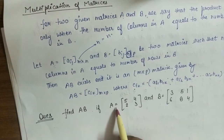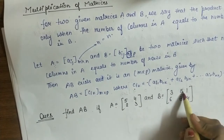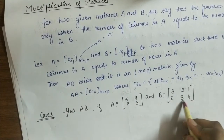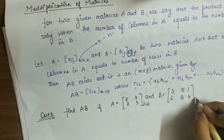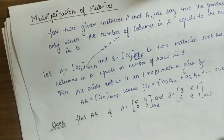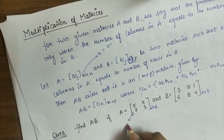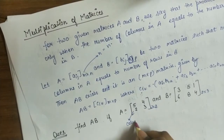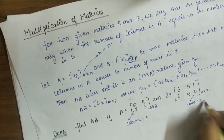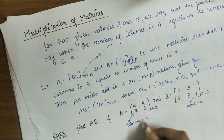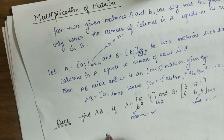Find AB if A = [5, 4; 2, 3], a 2×2 matrix, and B = [3, 5, 1; 6, 8, 4], a 2×3 matrix. The number of columns in A is 2 and the number of rows in B is 2, so the product AB exists.